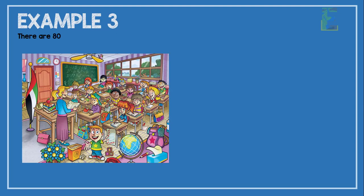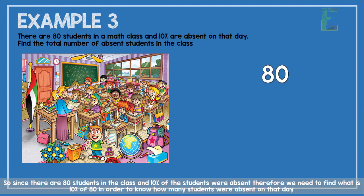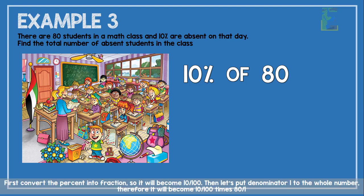Now for our last example. There are 80 students in a math class and 10% are absent on that day. Find the total number of absent students. Since there are 80 students and 10% were absent, we need to find 10% of 80. First, let's convert the percent into a fraction, so it will become 10 over 100.